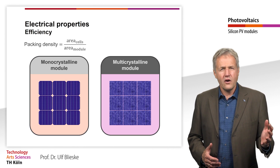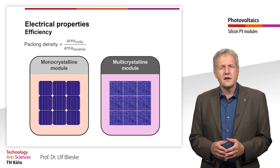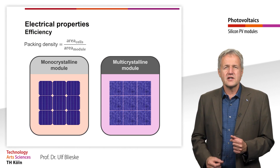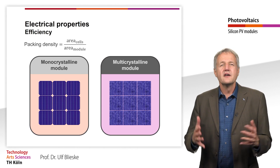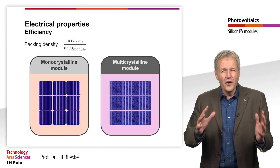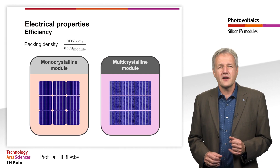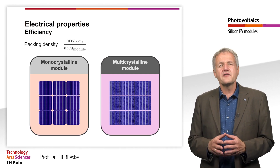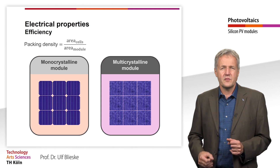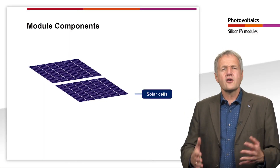All the reasons listed here lead to the fact that the efficiency on module level is about 2-3% absolute lower than on cell level. At the present time, that is in November 2021, the efficiency record for crystalline silicon modules is 24.4%. The corresponding cell efficiency is 26.7%.